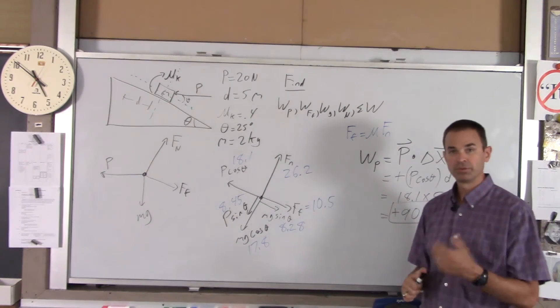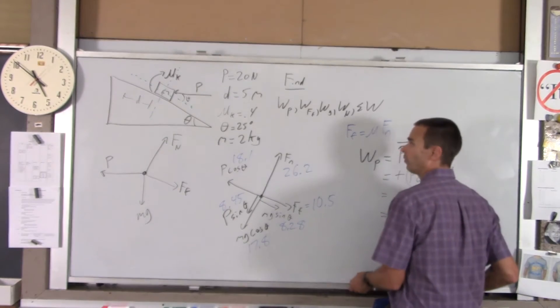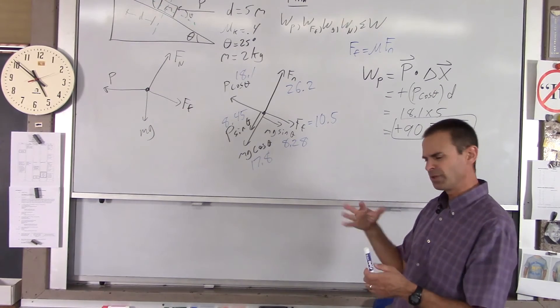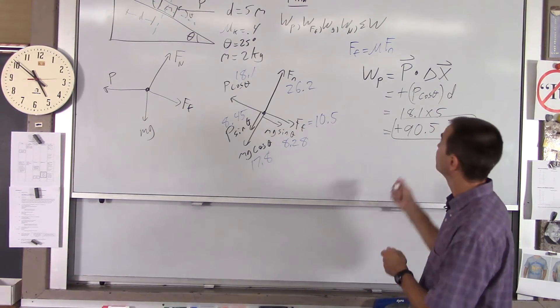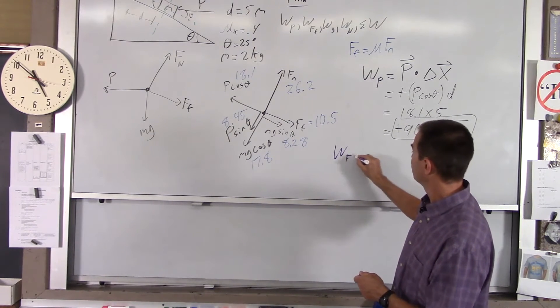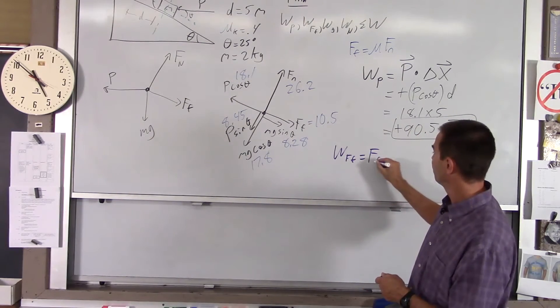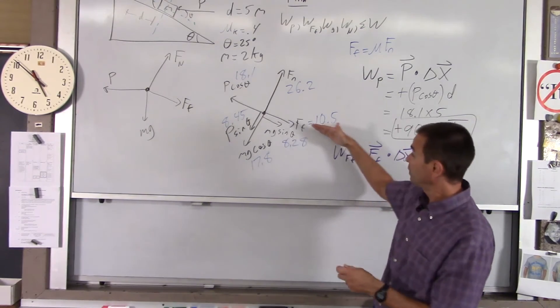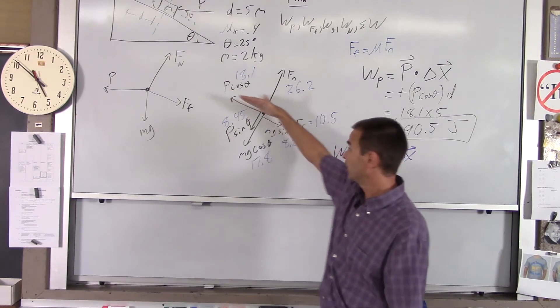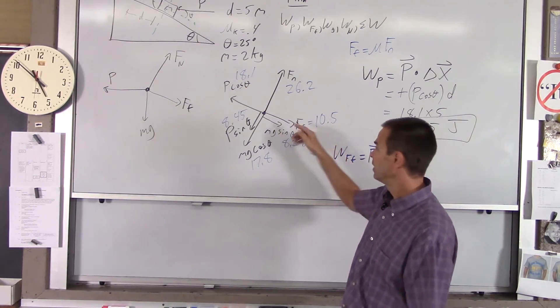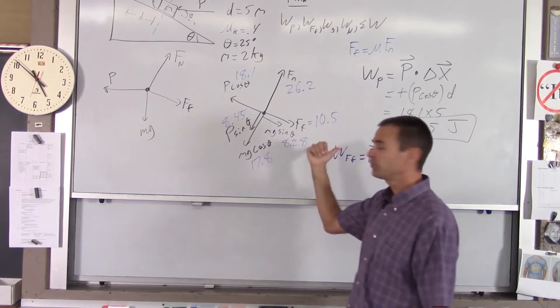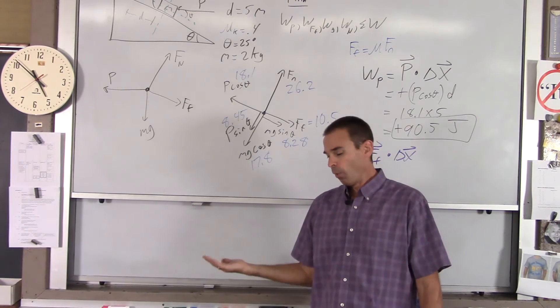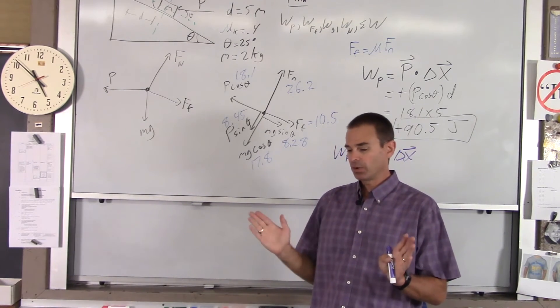For all the other ones it's the same process, you're just putting different numbers in and being very careful with plus and minus. Work done by the force of friction would be the force of friction dot delta x. For this one, friction is in a direction parallel to the direction of motion, but it's pointing the opposite way. We're moving up the incline, the friction's pointing down the incline, so friction's going to do negative work.